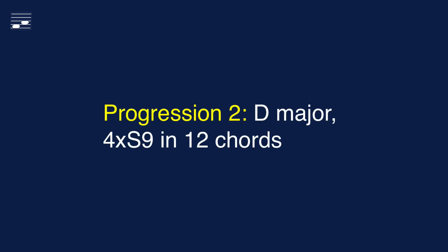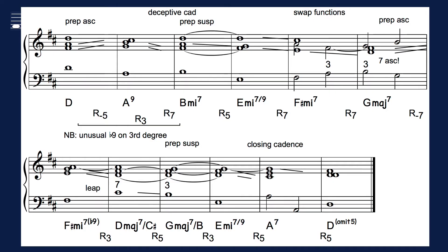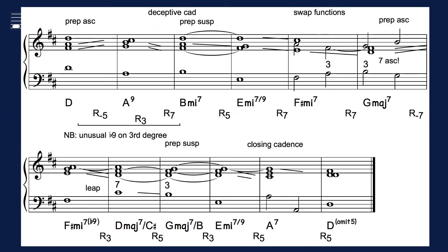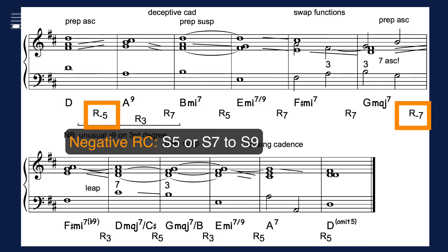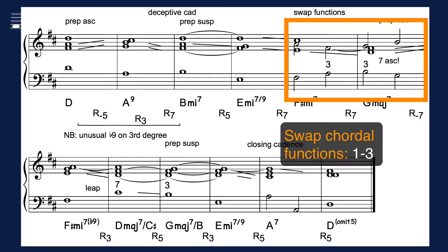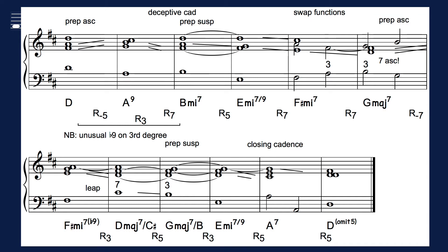The second progression is in D major with 4 ninth chords in a total of 12. Again we see the fixed S9 chord structure in root position. The dissonant preparation principle is indicated above the staff. The example has only two negative root cycles, which are linked with the ascending stepwise preparation of S9. The voice leading uses the swapping of adjacent chordal functions 1 and 3, a technique mentioned before, used here to improve the preparation of the following 9th chord.